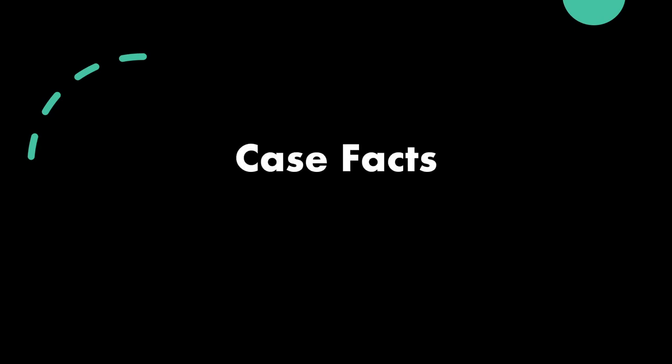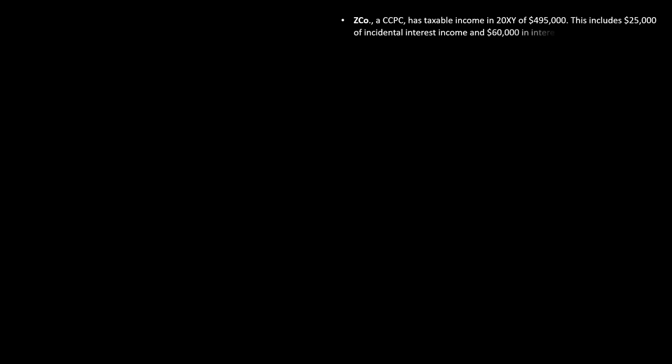Let's apply some of what we learned from lecture and our readings with some case facts, where we're going to ask you to calculate a dividend refund. ZEDCO, a CCPC, has taxable income of $495,000, which includes $25,000 of incidental interest income and $60,000 in interest from long-term bonds, with the remainder being active income. ZEDCO had no foreign income during the year. Let's start to visualize this as we go through the different facts in the case.